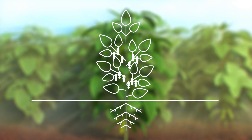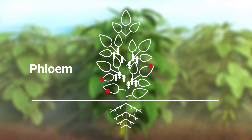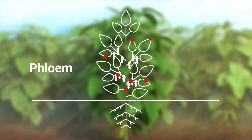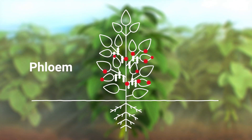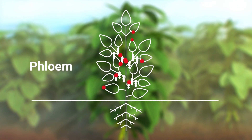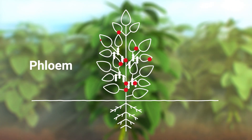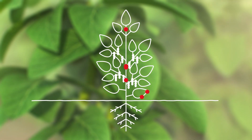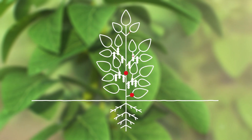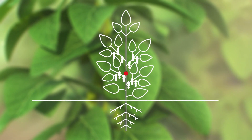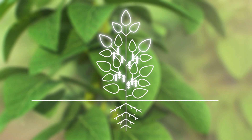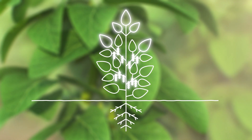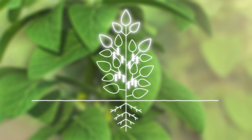Especially if the nutrient supply from the soil is insufficient, the phloem can move nutrients within the plant to where they are needed most. Places where nutrients are needed most are younger plant parts, growing points and fruits.